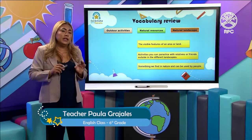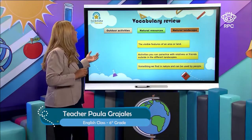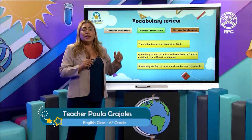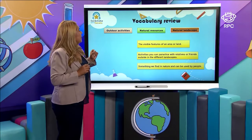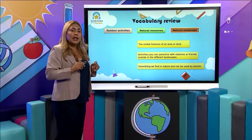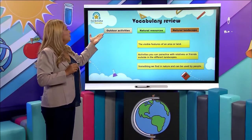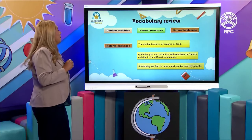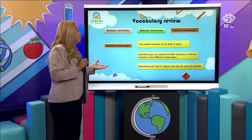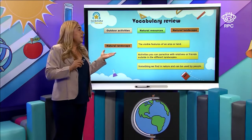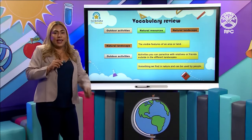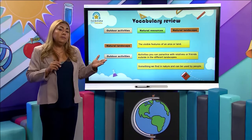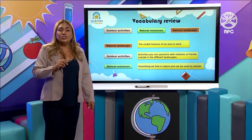Here we have three important things to remember from our lesson today: the meaning of outdoor activities, natural resources, and natural landscape. Natural landscape is the visible features of an area or land. Outdoor activities are activities that you can practice with relatives or friends outside in the different landscapes. And natural resources are something we find in nature and can be used by people — that is our topic today.